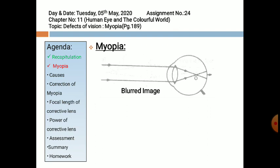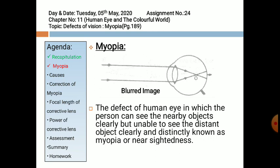A blurred image is formed of very far away objects. In myopia, a person can see the nearby objects clearly but cannot focus on distant objects. This is also known as short-sightedness. The far point of a short-sighted person may be only a few meters rather than at infinity. This defect occurs when a person's eyeball is larger. If the eyeball becomes larger, then this defect occurs. In such a case, the image of the distant object is formed in front of the retina, because the eye lens remains too converging, forming the image of the object in front of the retina. The defect of the human eye in which the person can see nearby objects clearly but is unable to see distant objects clearly is known as myopia, also known as nearsightedness.